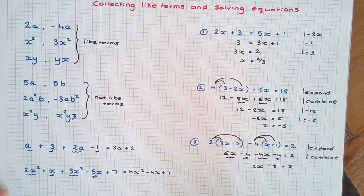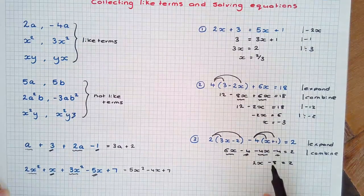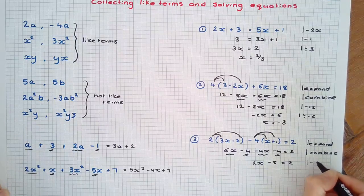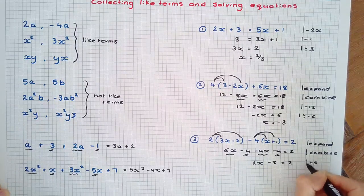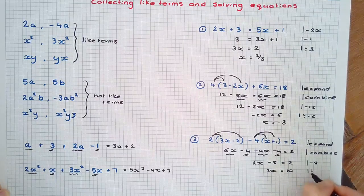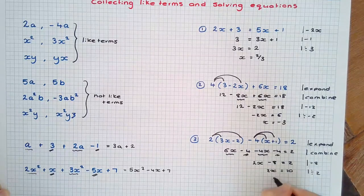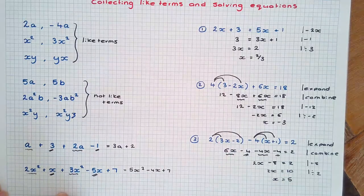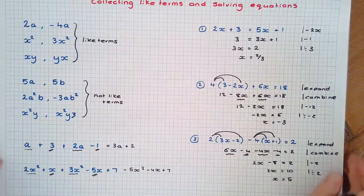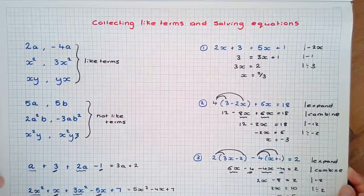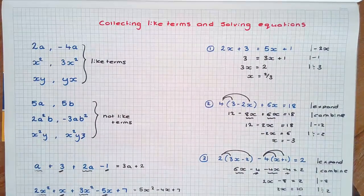Now we can just go through and work through backtracking, doing the inverse operation. I'm going to plus 8 to both sides and divide by 2 and we get our final solution. We should substitute it back into our equation to make sure that is the correct solution. And that is collecting like terms and solving equations.